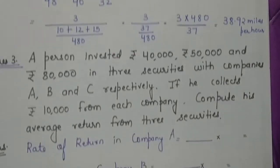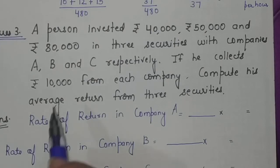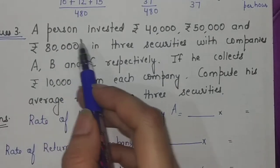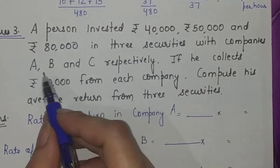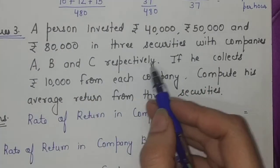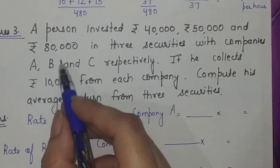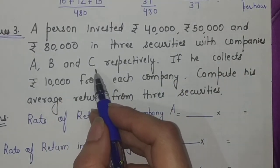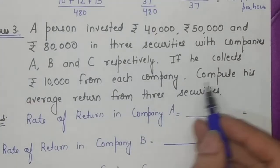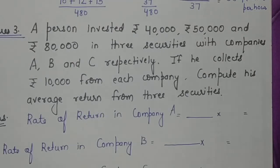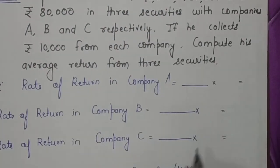This is another usage of harmonic mean for calculating average speed. Let's look into another question about shares investment. A person has invested 40,000, 50,000, and 80,000 in three securities with companies A, B, and C respectively. If he collected 10,000 from each company, find the average return. First let me see the rate of return in percentage form.